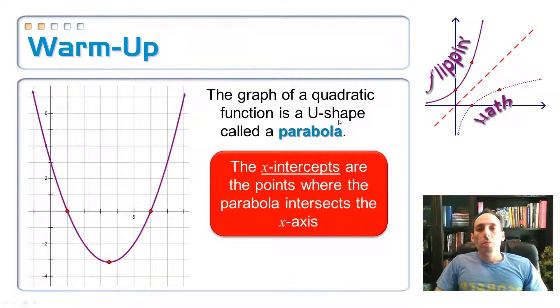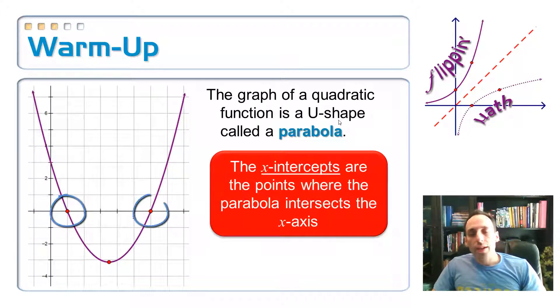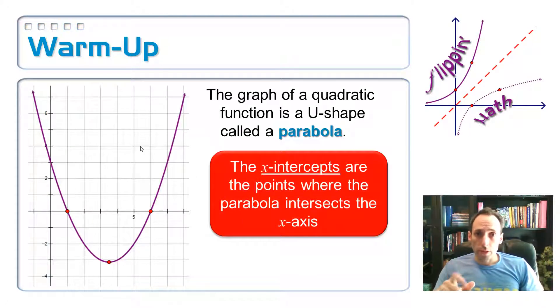So we're going to do much the same thing on a picture of a parabola. The graph of a quadratic function is this U-shape that is called a parabola, and the points where it touches the x-axis are of course called the x-intercepts. Now what I need you to do right now is go ahead and print yourself out a copy of this parabola so that you can do the little activity and take some notes on it as well. This is available on my website.